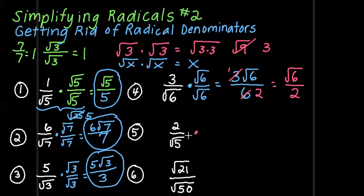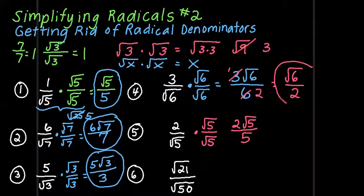Next one, I'm going to multiply the top by the square root of 5, and the bottom by the square root of 5, and get 2 times the square root of 5 over 5. That's it. I'll just circle the final answers here.